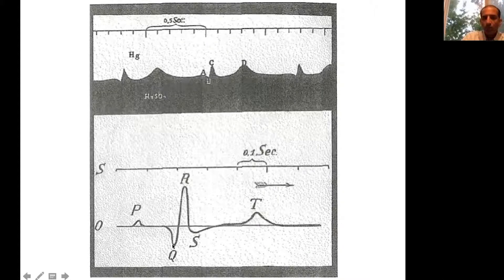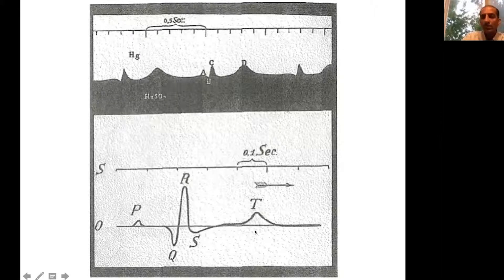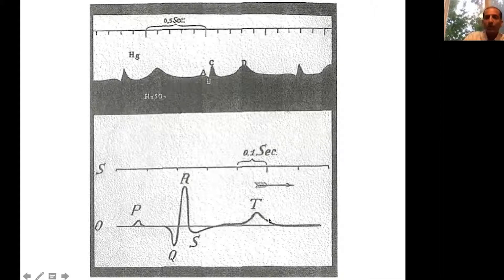The Q is the first negative deflection, R wave is the first positive deflection, and S wave is the second negative deflection. Then followed by repolarization of the ventricle, which is called the QT interval. You always have to have a T wave associated with the QRS, because the T wave means repolarization of the ventricle. Without that, the next polarization cannot happen.